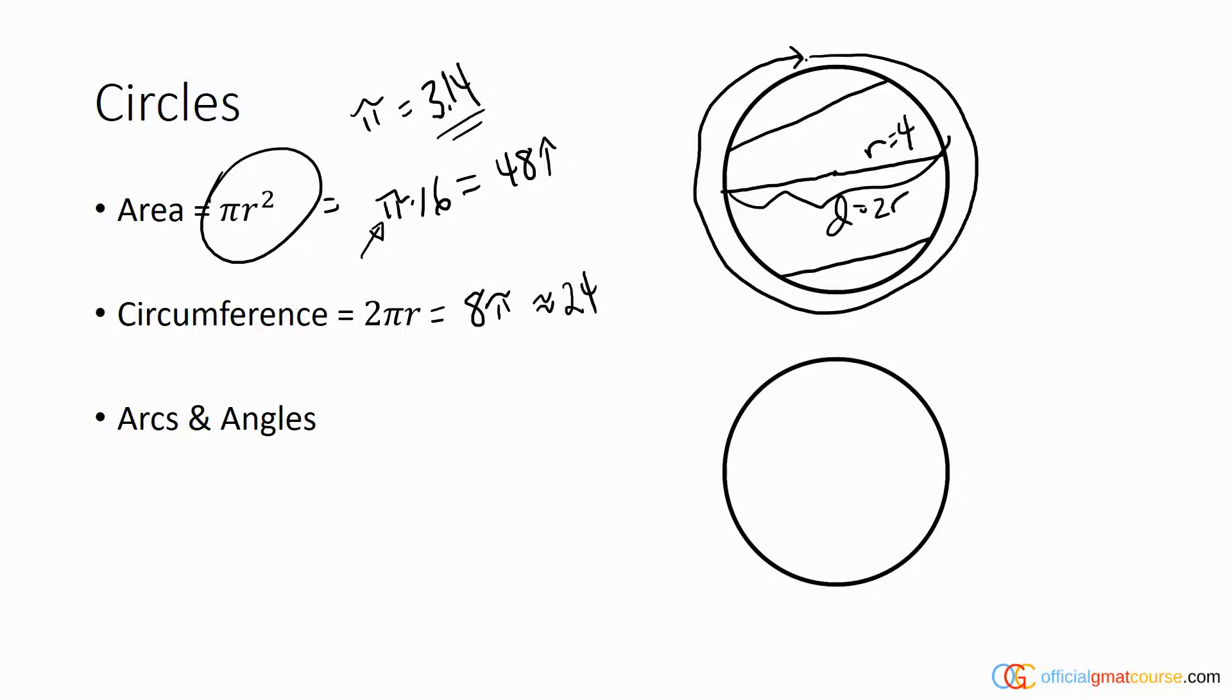Now arcs and angles are interesting. An arc is a part of the circumference of the circle, so it's like part of the perimeter of the circle. You can create an arc by connecting two points on the exterior to the center, or two points on the exterior to a point on the opposite side of the circle.